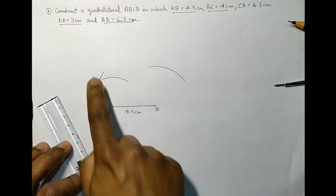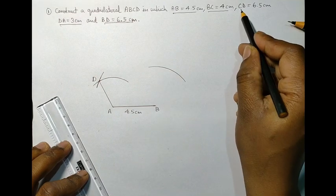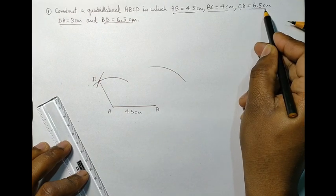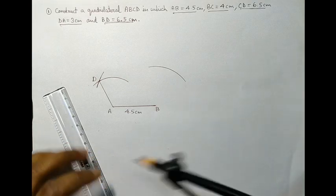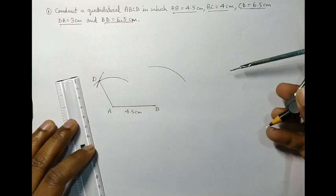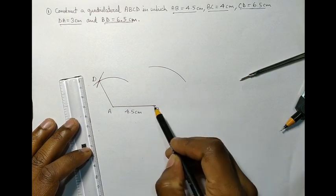And BD, which is already given, 6.5 cm, is equal to CD. So first, let's join the diagonals B and D.